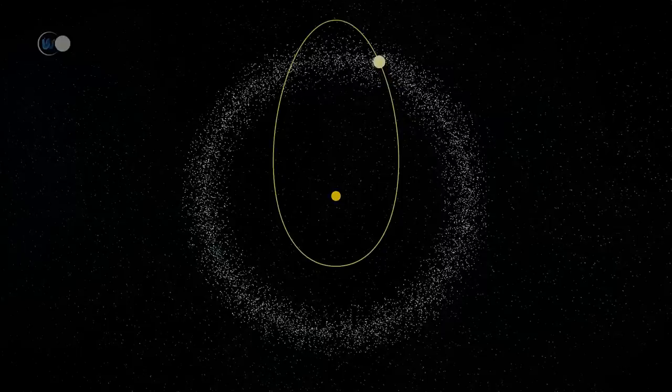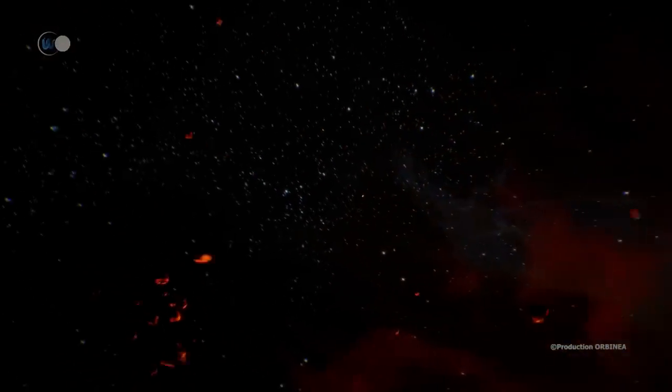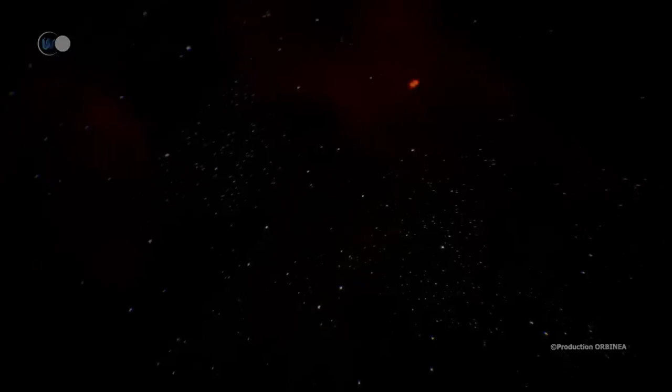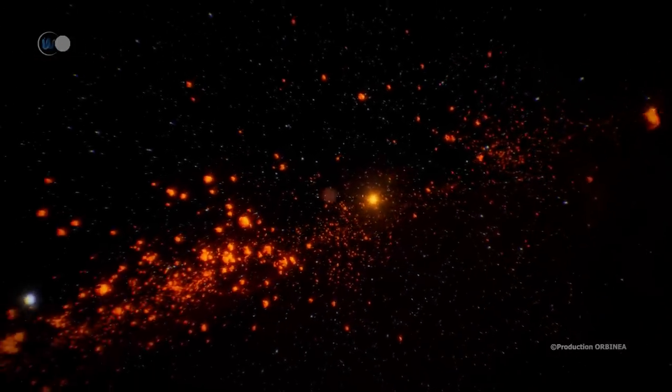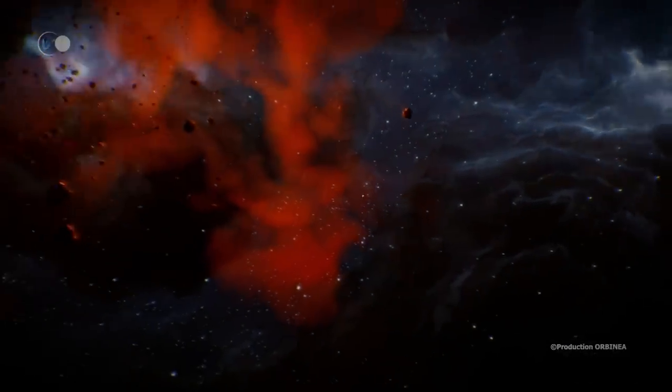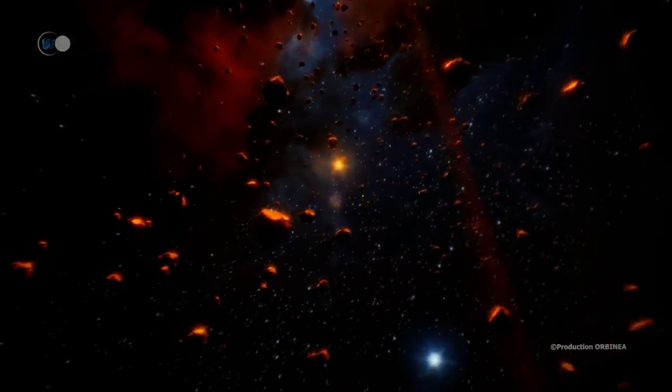This planet, named Epsilon Eridani b, or AEgir, follows a slightly eccentric elliptical orbit. Its semi-major axis is equivalent to the distance between our Sun and the asteroid belt. The size of this gas giant is estimated between 80 and 160 percent of the size of Jupiter. It completes its orbit in seven years. If a planet could have formed in this environment, it is probably not alone, especially since the observed dust cloud has an asymmetry that could be explained by the presence of a second planet. This one would then be located much further away than the first one, and would have a much longer orbital period.